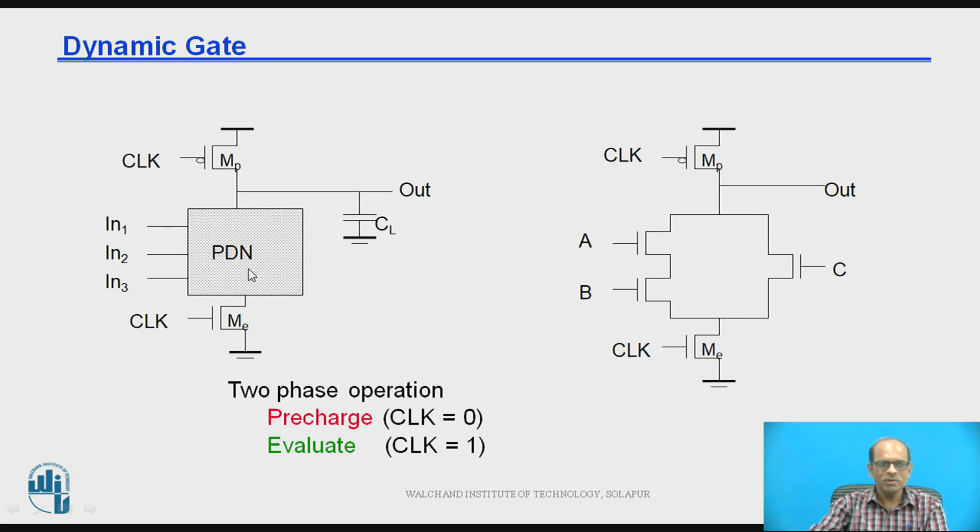Now this figure shows the basic principle of dynamic logic. So MP is a pre-charge transistor and ME is the evaluation transistor. MP and ME are driven by the clock. Here you can see this is a pull-down network and these are the inputs. And output is taken here. And this CL is the internal capacitance or equivalent capacitance and this is the output.